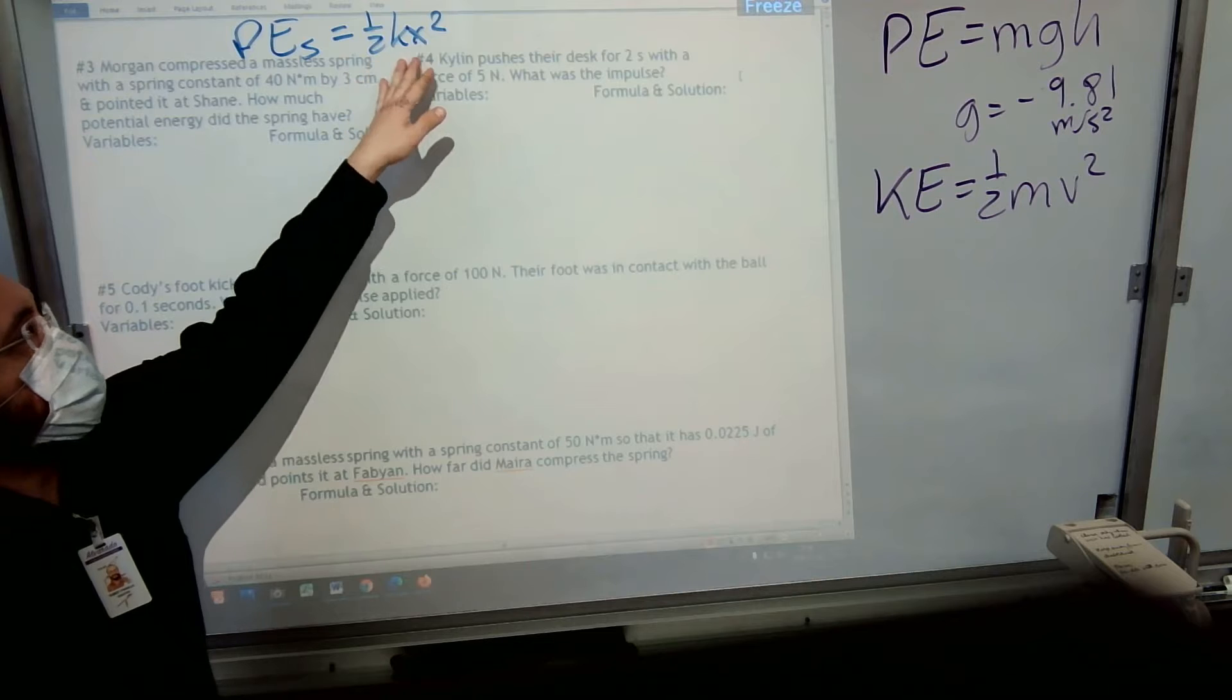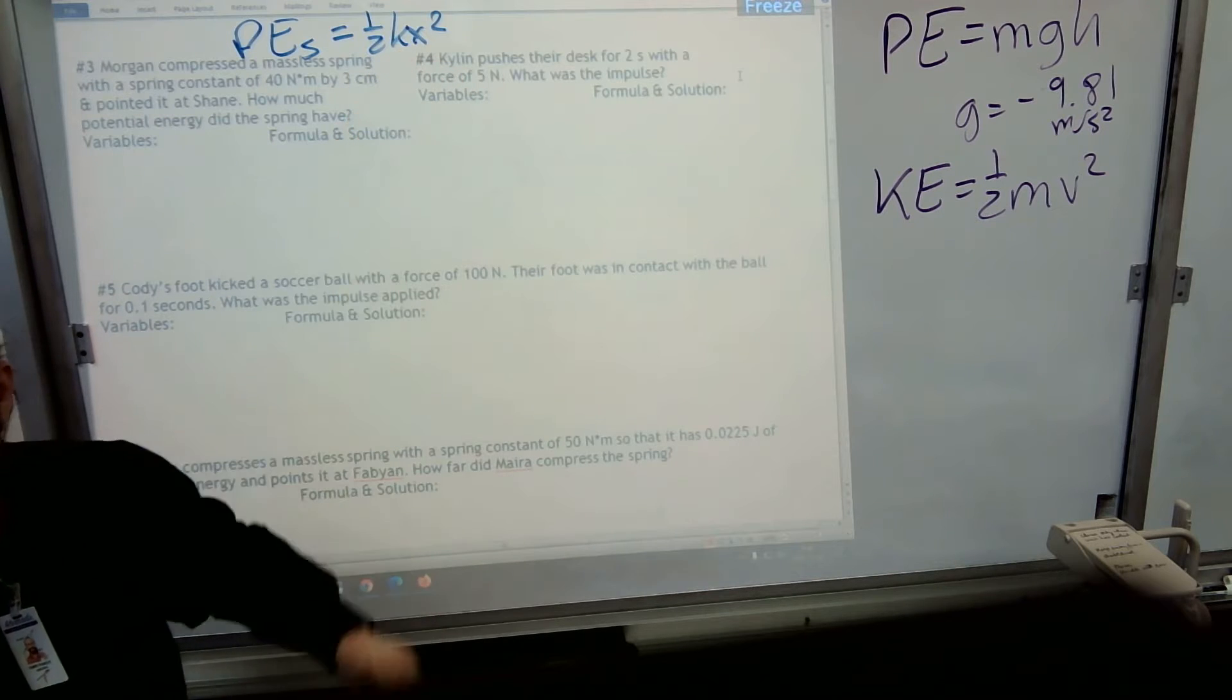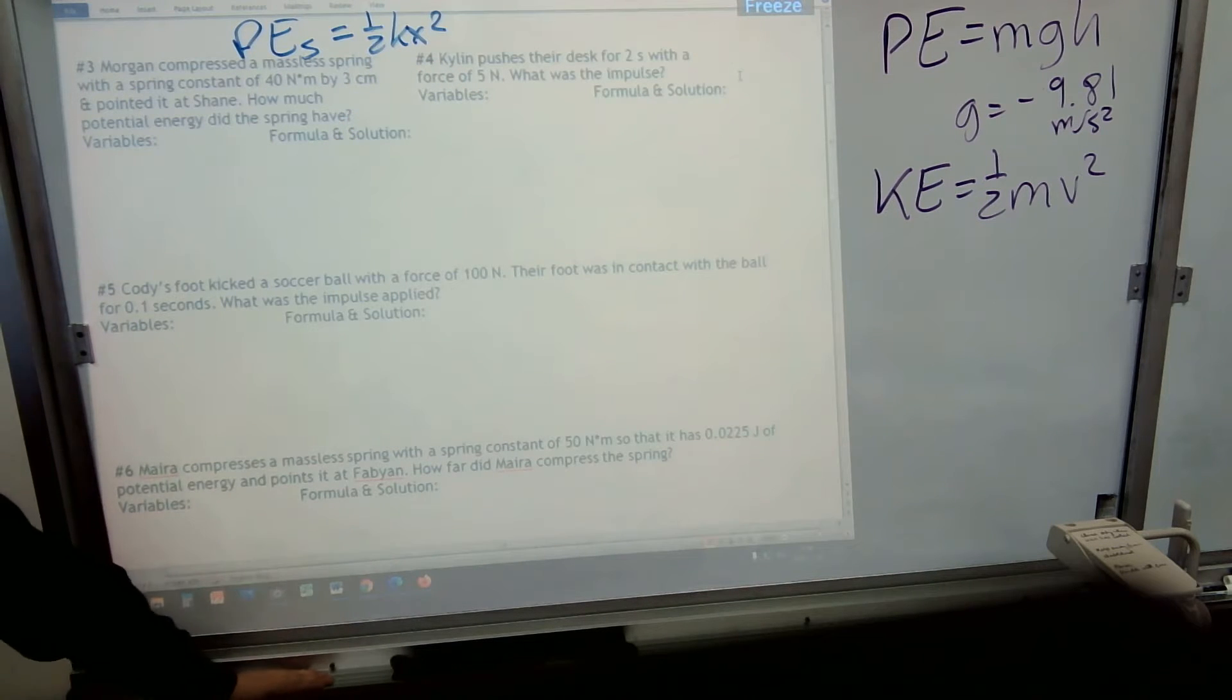The formula is one-half kx squared, where k is a spring constant. A lot of times k is for constant, even though constant doesn't start with a k. But maybe it does in the language of the people who figured this out.